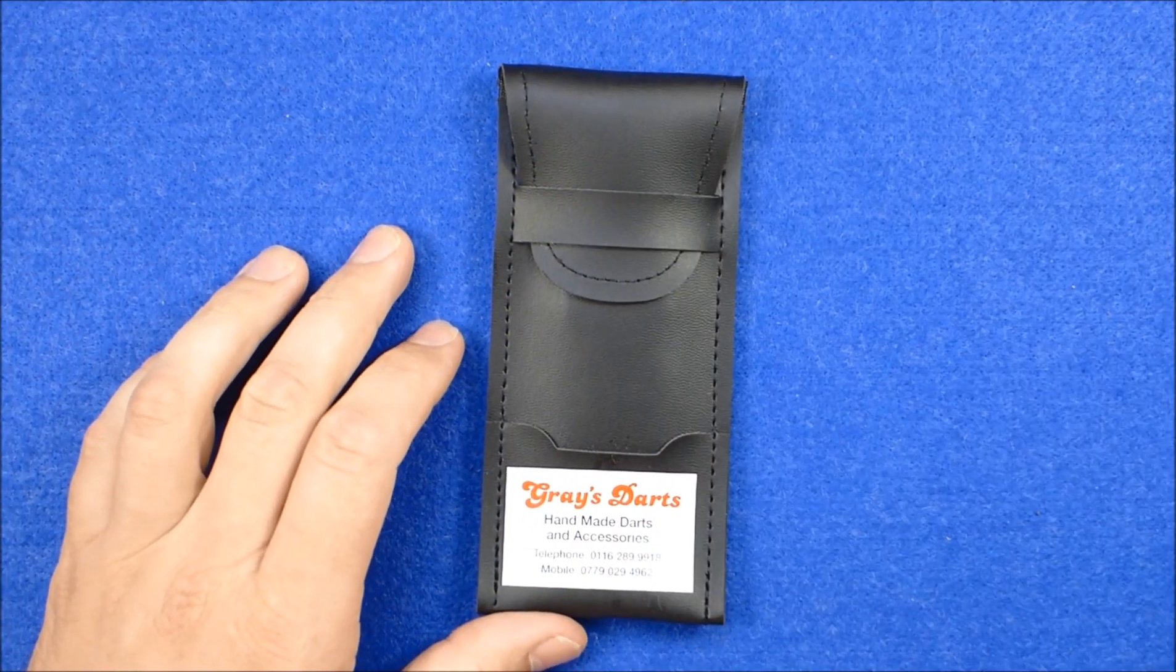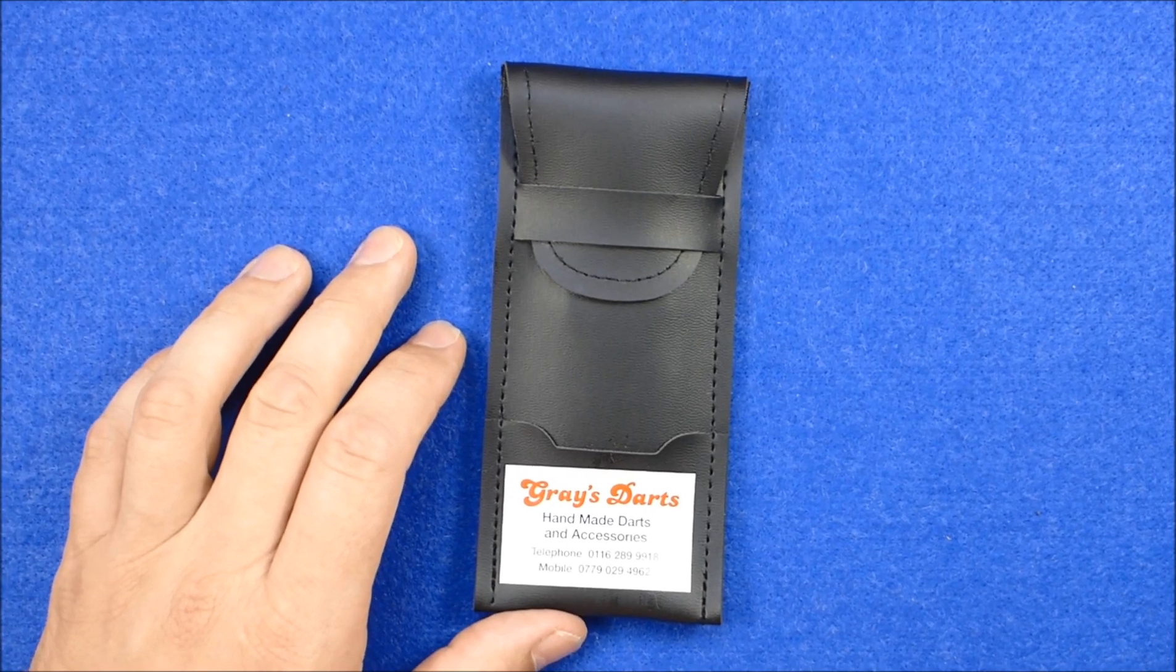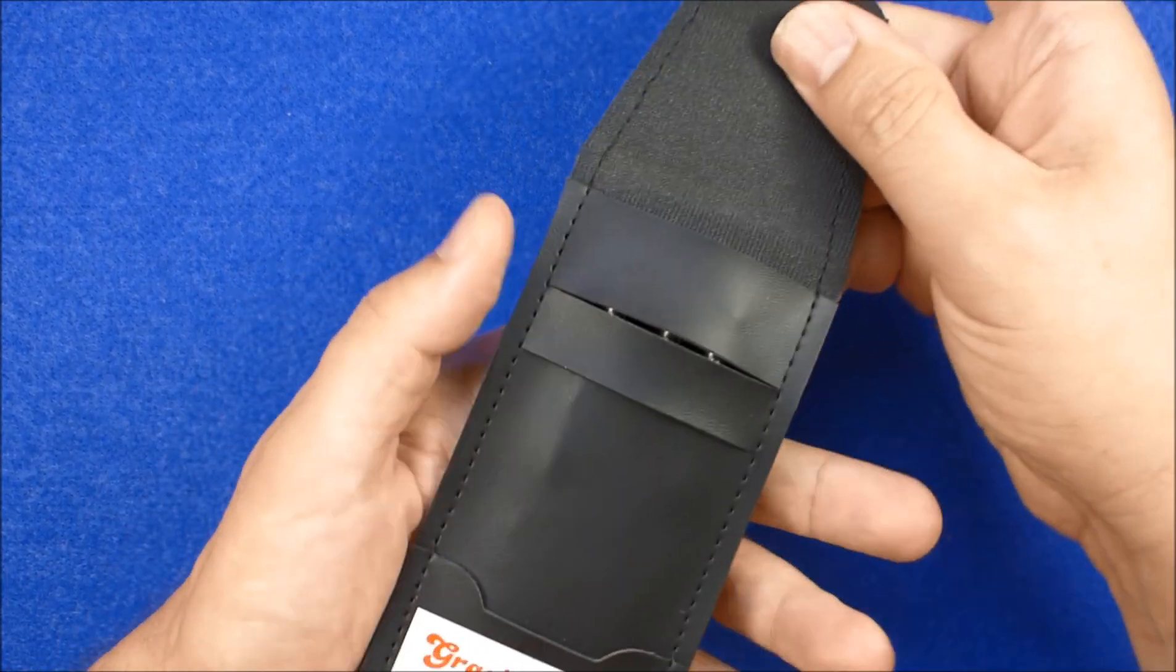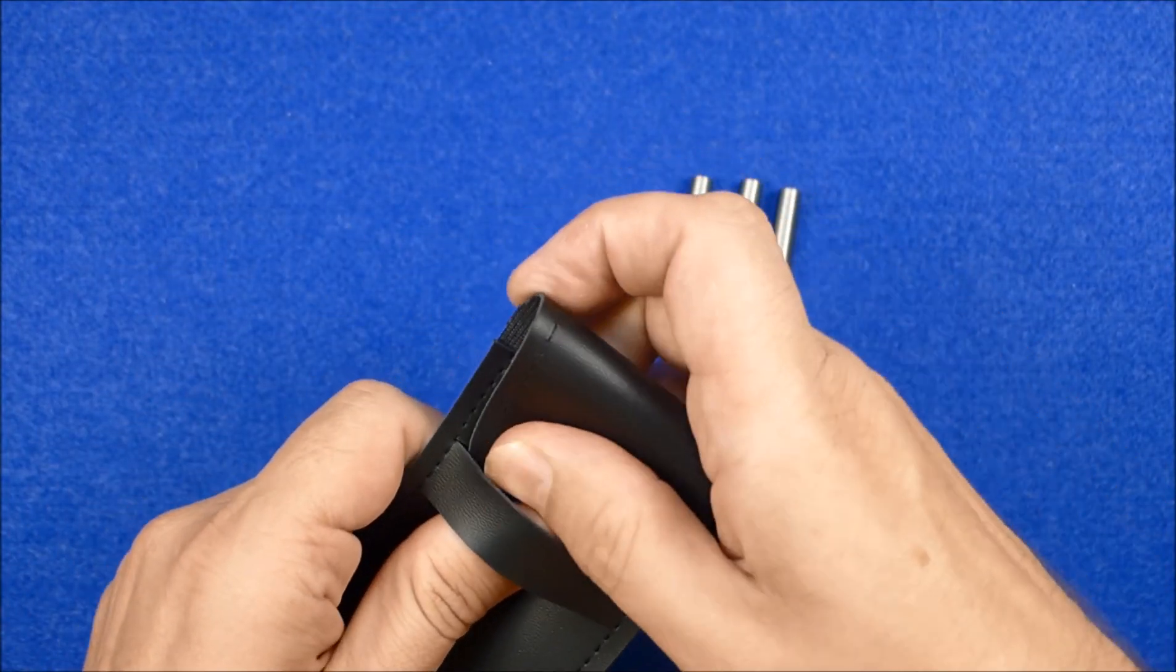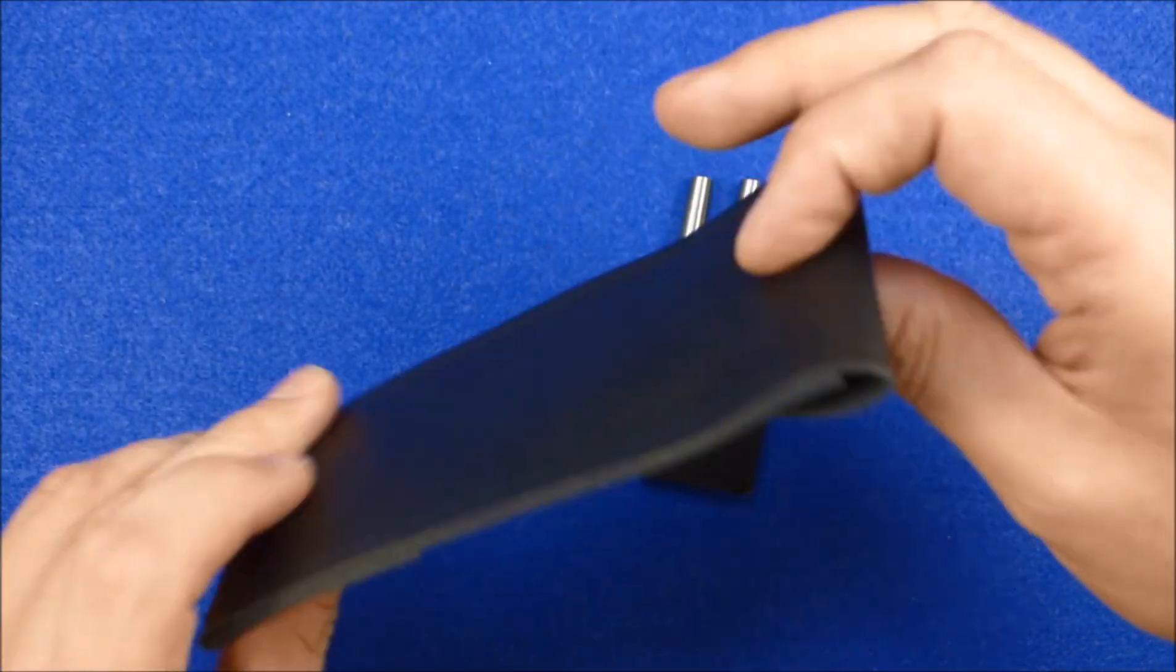Hello Darts Nuts, I just want to show you a set of darts that I had made. These are a custom made set from Grey's Darts in Leicester. They cost £25 and £3.50 postage and packaging, so £28.50 altogether.